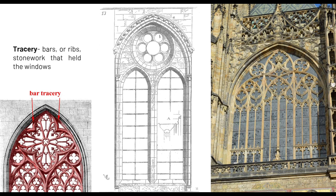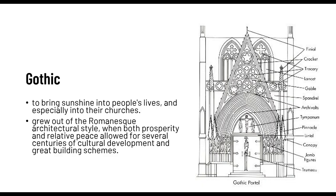Gothic architecture is characterized by tracery — one of the key characterizations. Gothic's main purpose or sense of achievement in terms of designing is to bring sunshine into people's lives and especially into their churches. I know this is very much the opposite of what your brain tells you in terms of Gothic, because when you say Gothic, you're thinking dark, heavy, sad, and kind of punk. But I will explain why Gothic connotes that, when it actually shouldn't in terms of Gothic architecture.